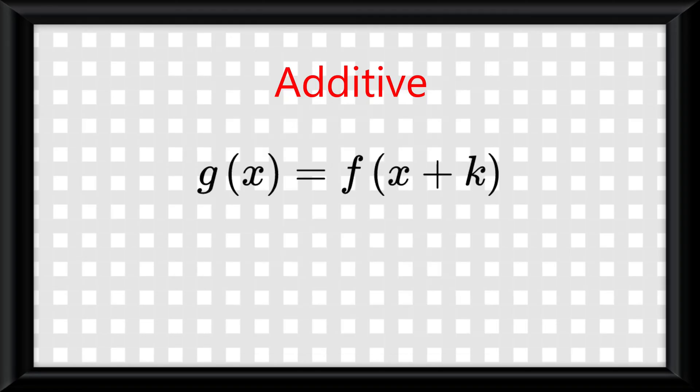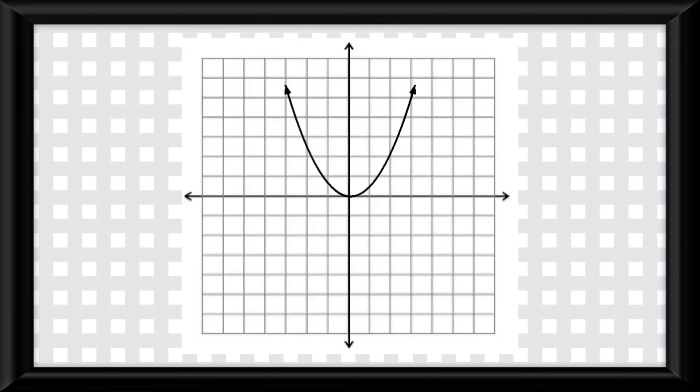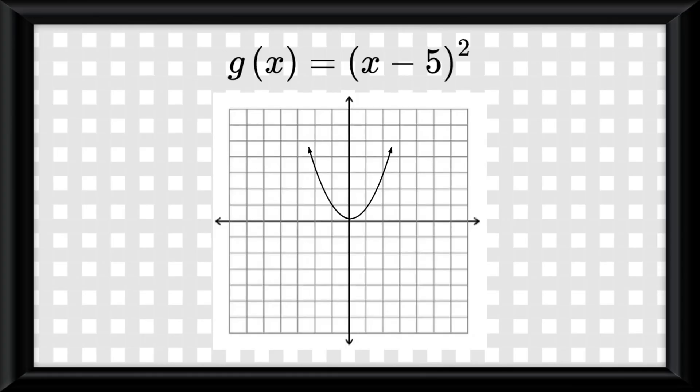G of x equals f of x plus k is known as a horizontal translation that moves the graph of f by negative k units either left or right. So if you see like x minus 5 in the parentheses, you know the graph goes 5 units to the right because it's always the opposite.